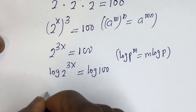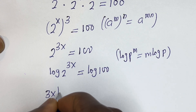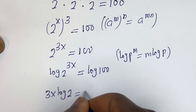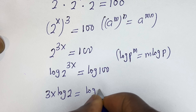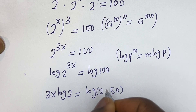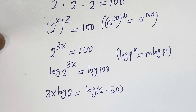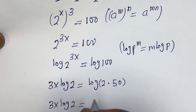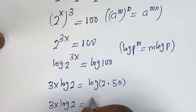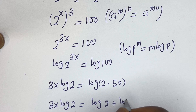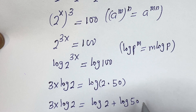Then this gives us 3x·log 2 is equal to log 100, which can be written as log(2 × 50). Then this is 3x·log 2 is equal to log 2 plus log 50.